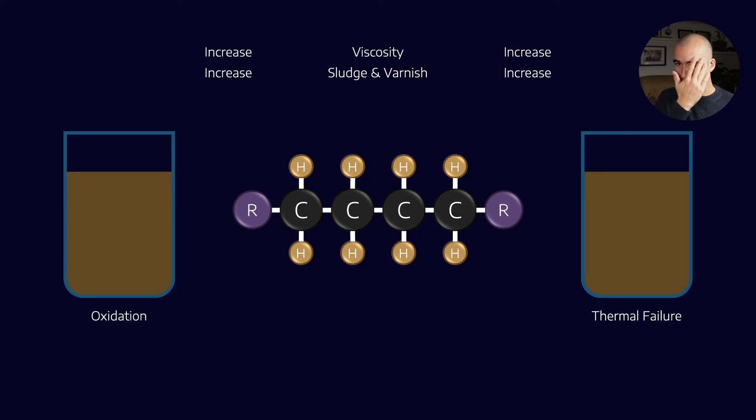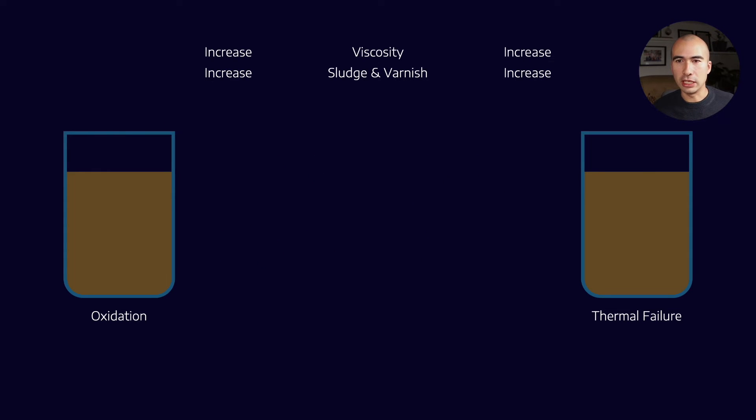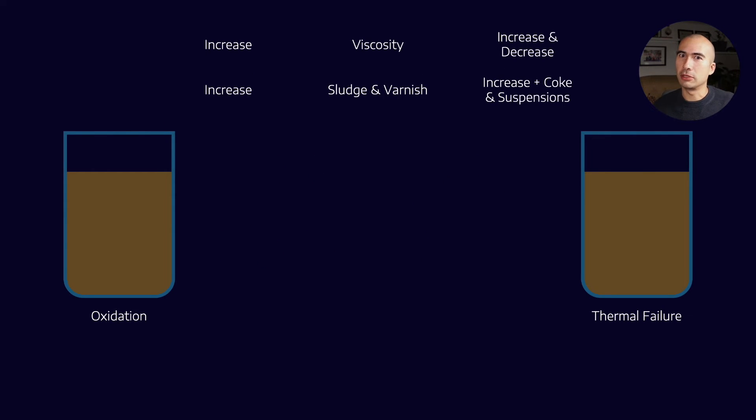One thing that is different about thermal failure as opposed to oxidation is that thermal failure also takes long chain molecules and splits them. There's a process called thermal cracking where you're basically giving the molecule so much energy that it breaks apart. In that case I've taken a long chain molecule and split it, so now I'm going from a higher viscosity to a lower viscosity. So depending on the situation, in thermal failure sometimes my viscosity increases but sometimes it also decreases.